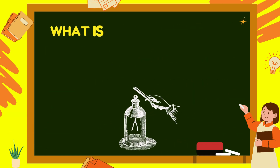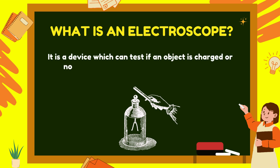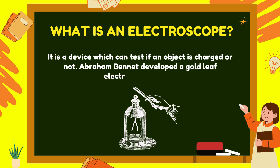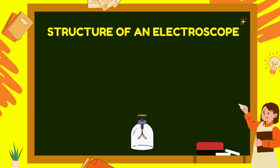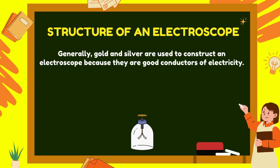What is an electroscope? It is a device which can test if an object is charged or not. Abraham Bennett developed a gold leaf electroscope in 1787. Generally, gold and silver are used to construct an electroscope because they are good conductors of electricity, though copper and aluminium can also be used.